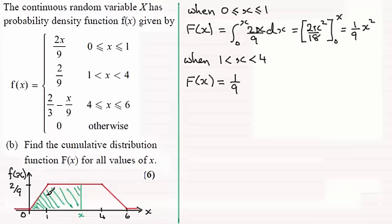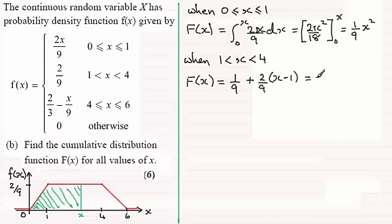Now we add the area of the rectangle, which has height 2/9 times length (X minus 1), giving 2/9 times (X minus 1). Expanding the bracket: 2x/9 minus 2/9. Combined with the 1/9 from the triangle, we get 1/9 plus 2x/9 minus 2/9, which simplifies to 2x/9 minus 1/9. So that's our expression for the interval between 1 and 4.